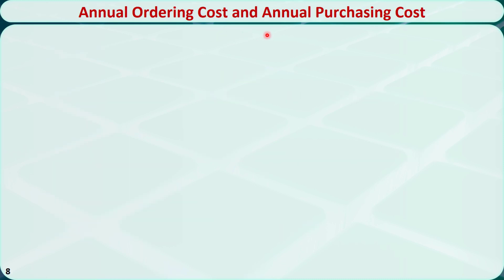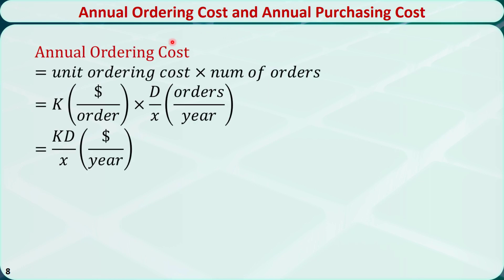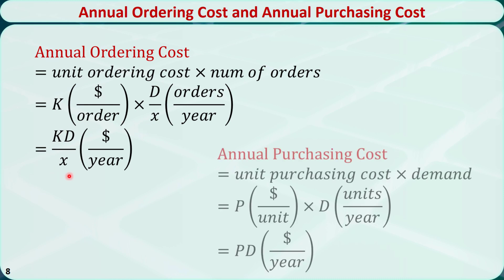Now let's calculate the annual ordering cost and the annual purchasing cost. The annual ordering cost equals the unit ordering cost K times the number of orders D/x, giving K·D/x dollars per year. The annual purchasing cost equals the unit purchasing cost P times annual demand D, giving P·D dollars per year.